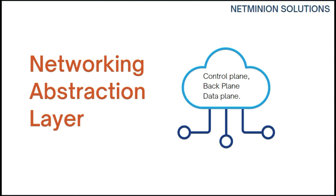In this slide we can see a couple of planes. The control plane refers to all functions and processes that determine which path to use to send a packet or frame; it is responsible for building and maintaining the IP routing table. The data plane refers to all functions and processes that forward packets or frames from one interface to another based on control plane logic; it is responsible for forwarding the actual IP packet. There is also the back plane, also known as the fabric.